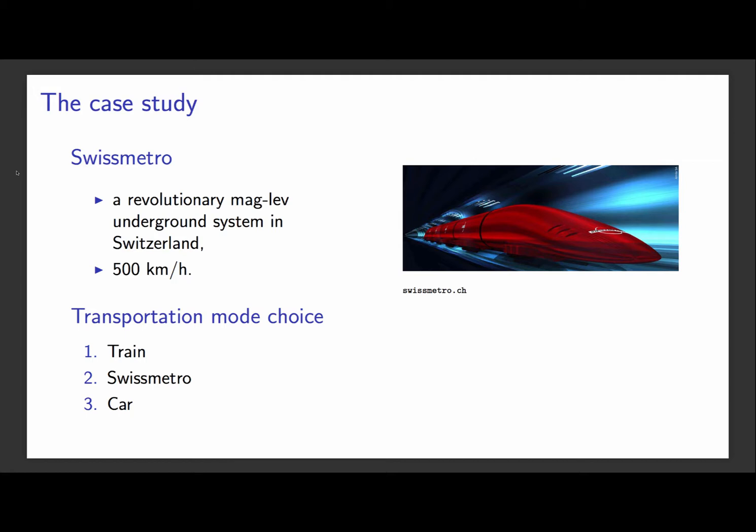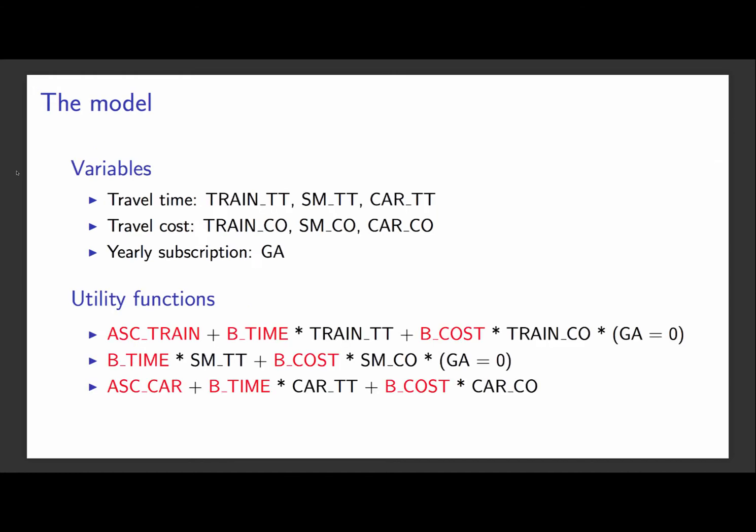We are interested in analyzing the demand for such a system. To do so, we would like to estimate a transportation mode choice model where the three competing modes would be the regular train, the SwissMetro, or the car. We will consider three variables from the dataset that has been collected in Switzerland.